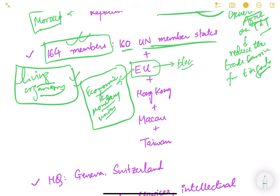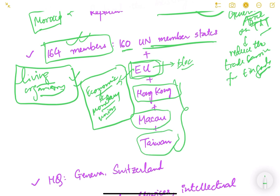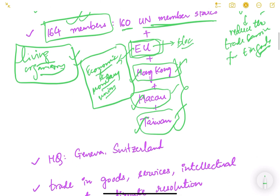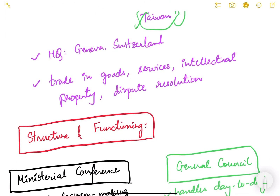When it comes to international trade, the European Union is one block and therefore one WTO member. Hong Kong, Macau, and Taiwan are independently part of WTO because they have their own trade policies and international trade, even though China claims them as part of greater China. In total, there are 164 members — India is also a member from the beginning, having been a member of GATT. The headquarters of WTO is in Geneva, Switzerland.